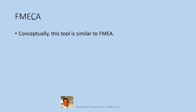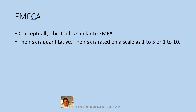Let us see what is FMECA. Conceptually, this tool is similar to FMEA. The difference in this tool is the letter C, which stands for criticality when compared to FMEA. The risk is quantitative — rated on a scale of 1 to 5 or 1 to 10. Either the FMEA tool or FMECA is used, the outcome will be the same. For some typical examples, please refer to my earlier video titled ICH Q9 Examples of FMEA and FTA dated about a year ago — a very useful video.